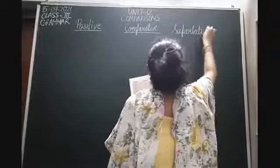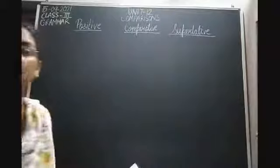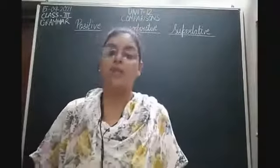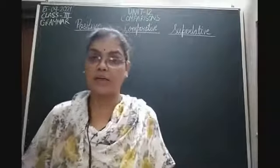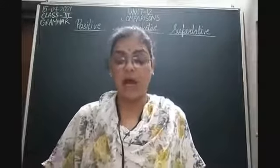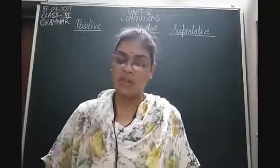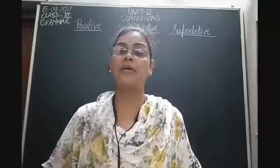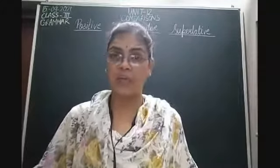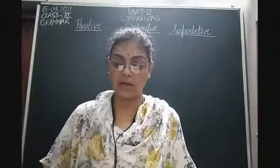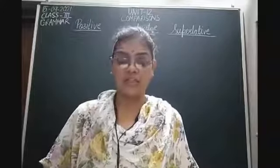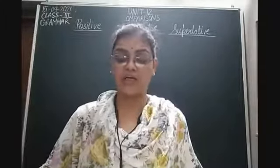The first positive degree is tall, comparative taller, superlative tallest. The second positive degree is fair, comparative fairer, superlative fairest. The third positive degree is sweet, comparative sweeter, superlative sweetest. The fourth is high, comparative higher, superlative highest. The fifth positive degree is fast, comparative faster, superlative fastest.